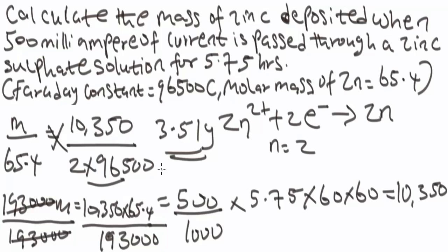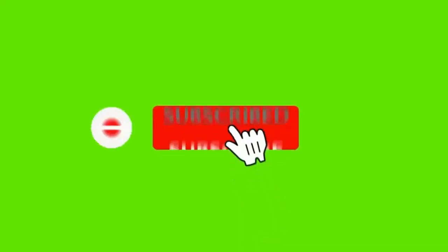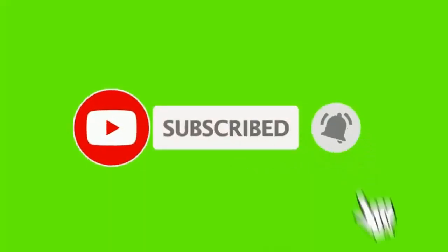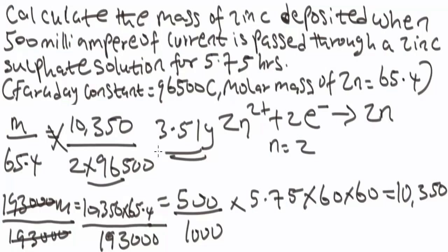So guys, basically you can solve problems involving Faraday's first law of electrolysis using this formula: mass over molar mass equals quantity of electricity over (number of moles of electricity times Faraday's constant). Just apply this formula and you'll be good to go. That brings us to the end of the class. Hope you learned something. If you're new to the channel, subscribe for more videos, and feel free to leave questions in the comments.